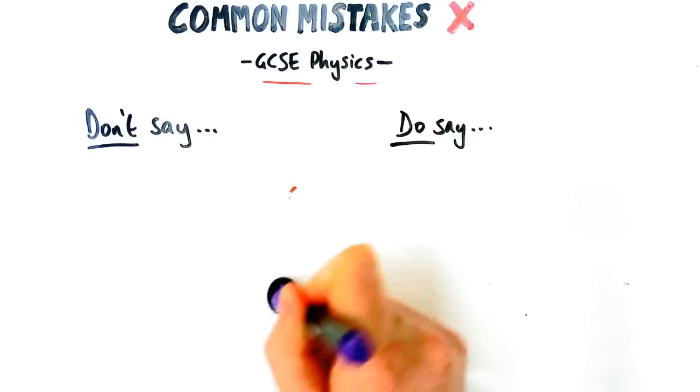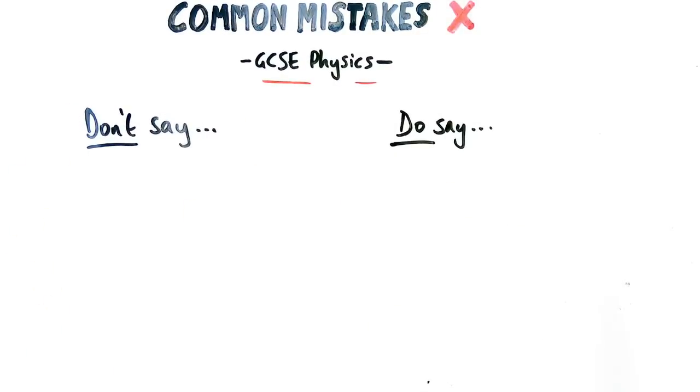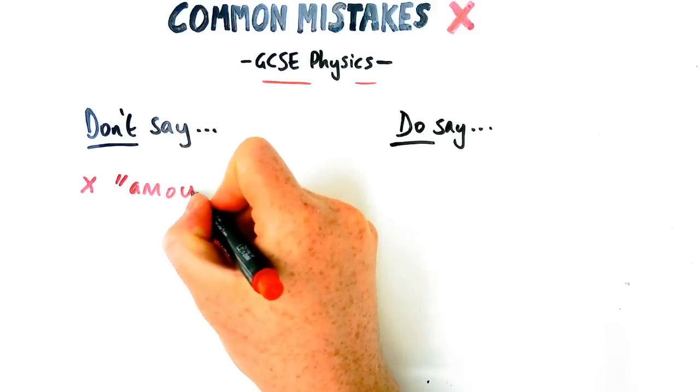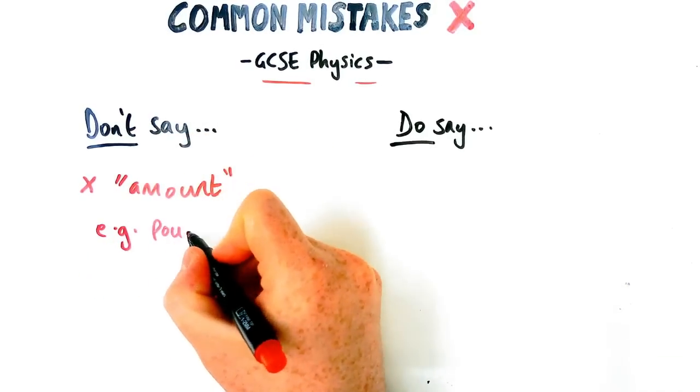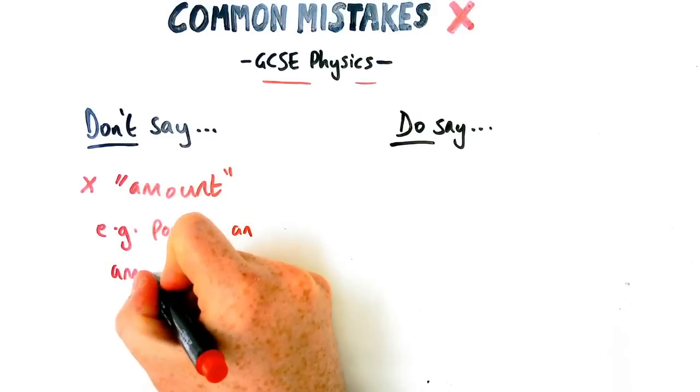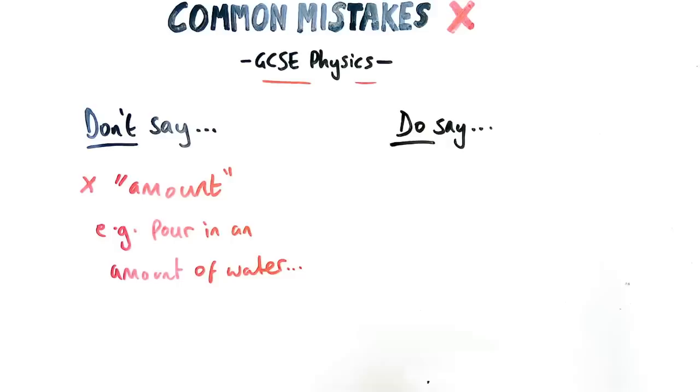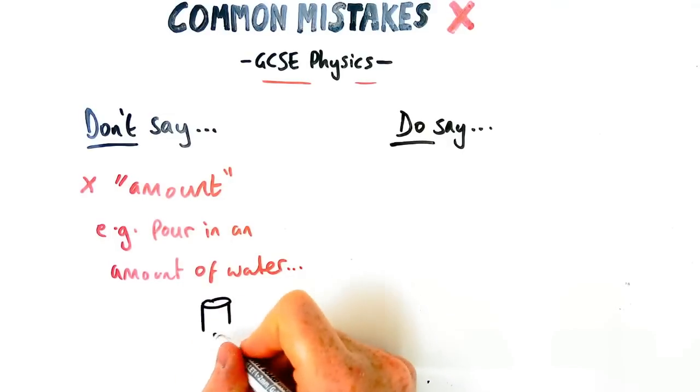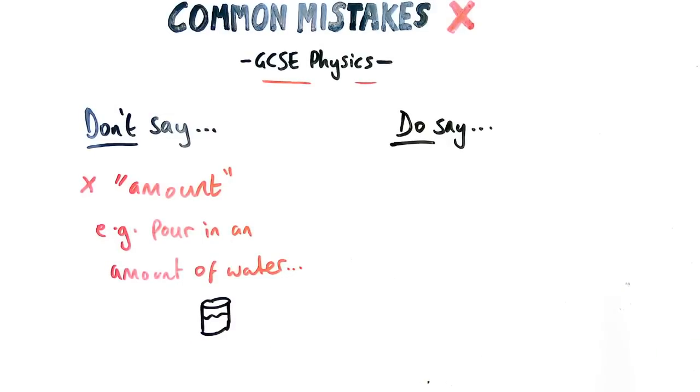Next thing which we don't say in exams is something that comes up in chemistry as well and biology is saying the word amount. So if you are talking about a practical, for example, you don't just say pouring an amount of water or put this amount of something in a beaker or a scale, something like that.